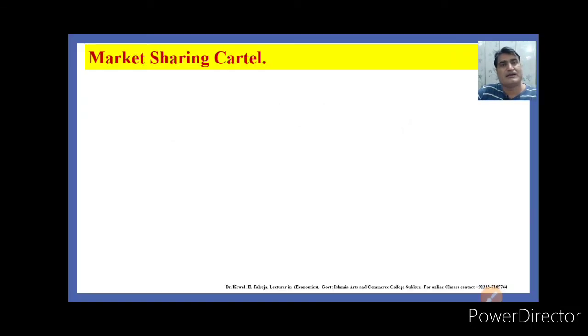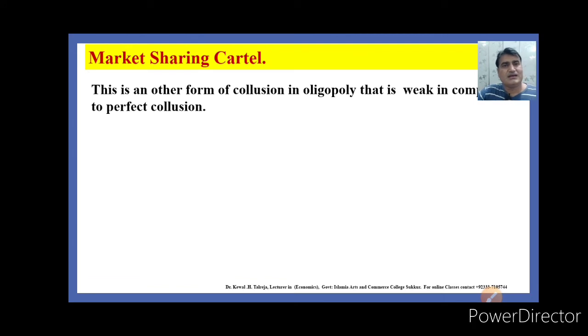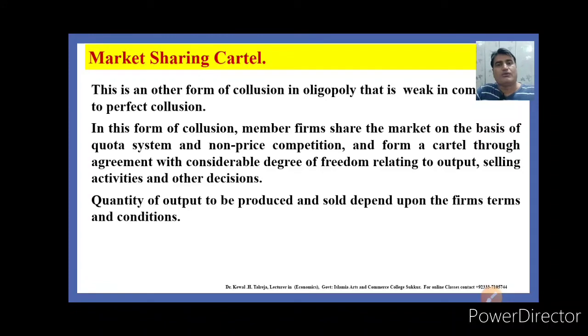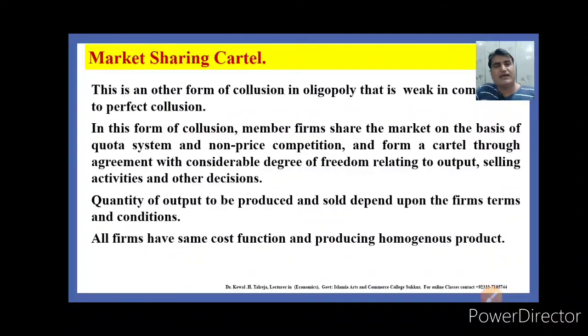Another form of cartel is market-sharing cartel. This is another form of collusion in oligopoly that is weak in comparison to perfect cartel. In this form of collusion, member firms share the market on the basis of quota system and non-price competition, and form a cartel through agreement with considerable degree of freedom relating to output, selling activities, and other decisions. Quantity of output to be produced and sold depends upon the firm's terms and conditions. All firms have same cost function and produce homogenous products.